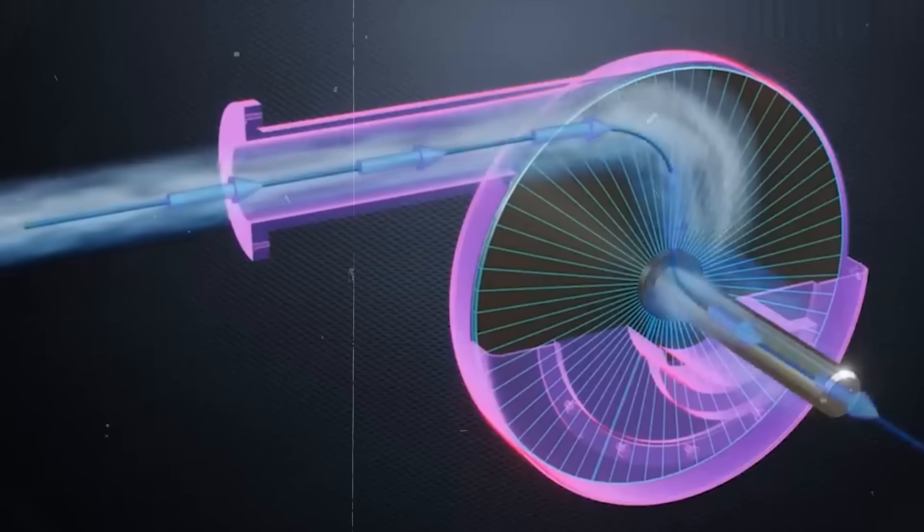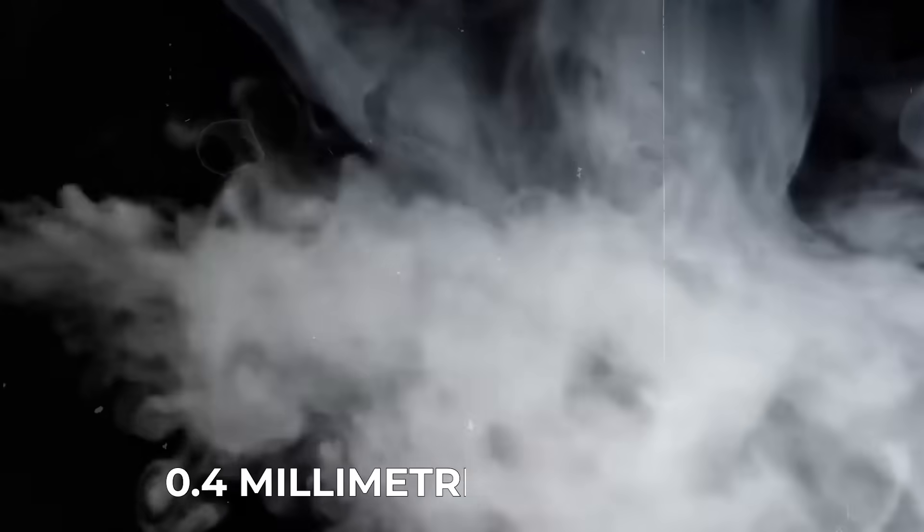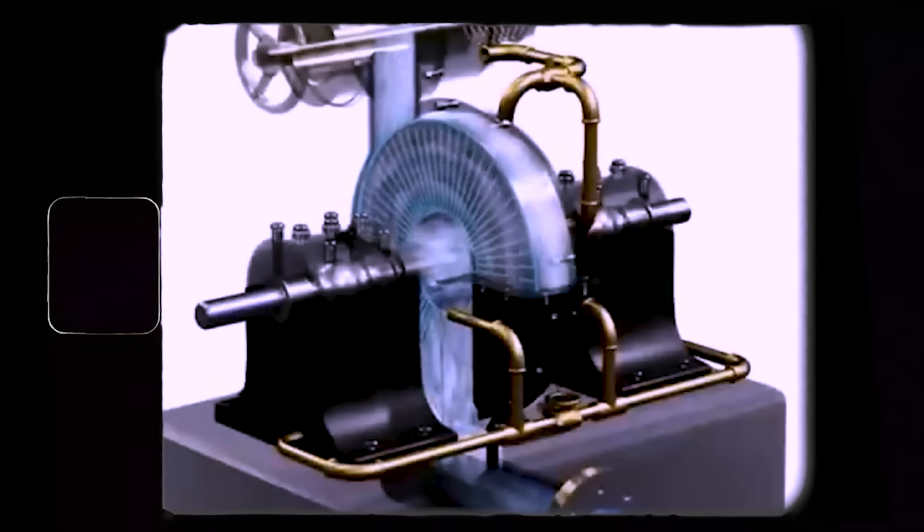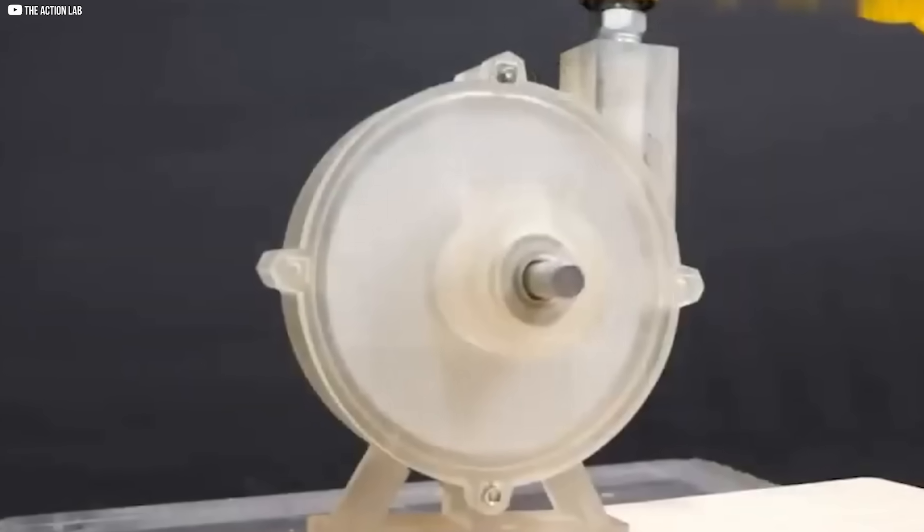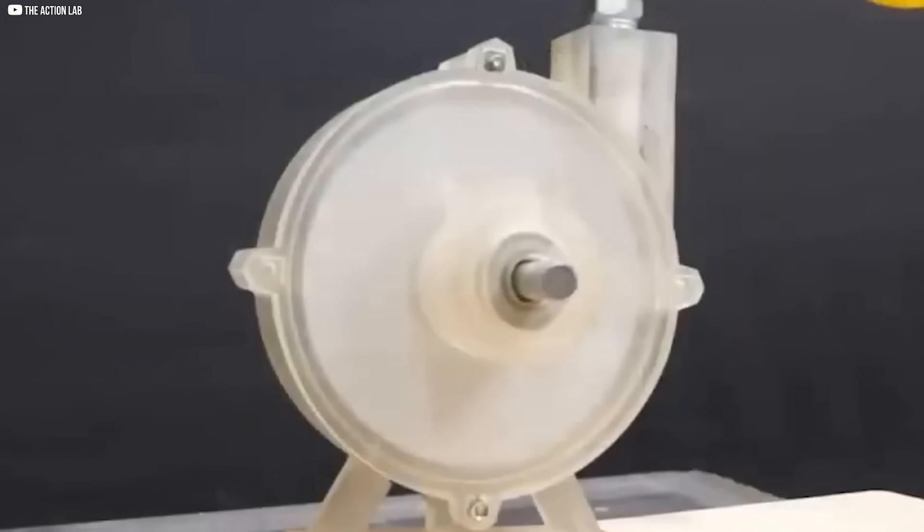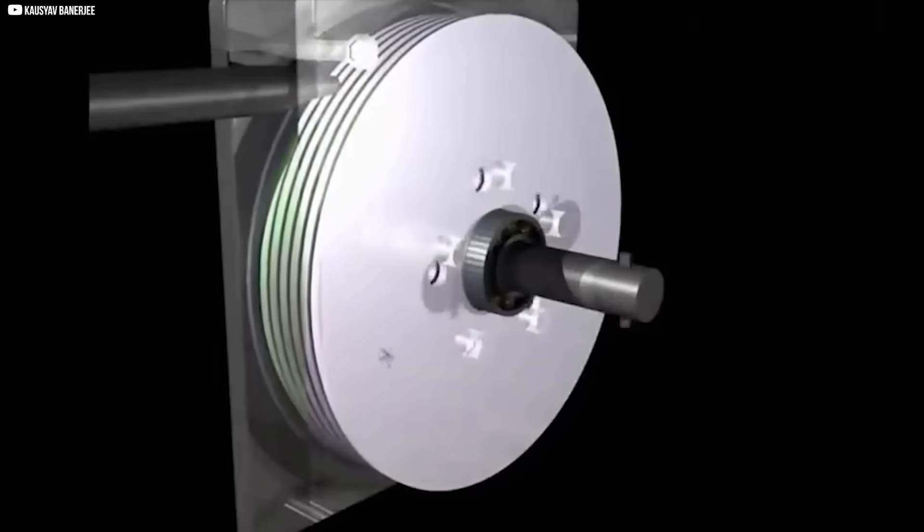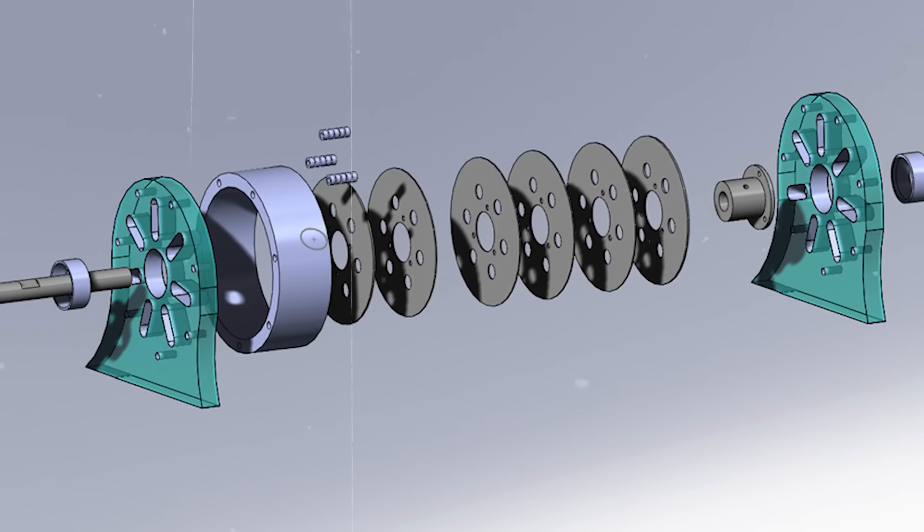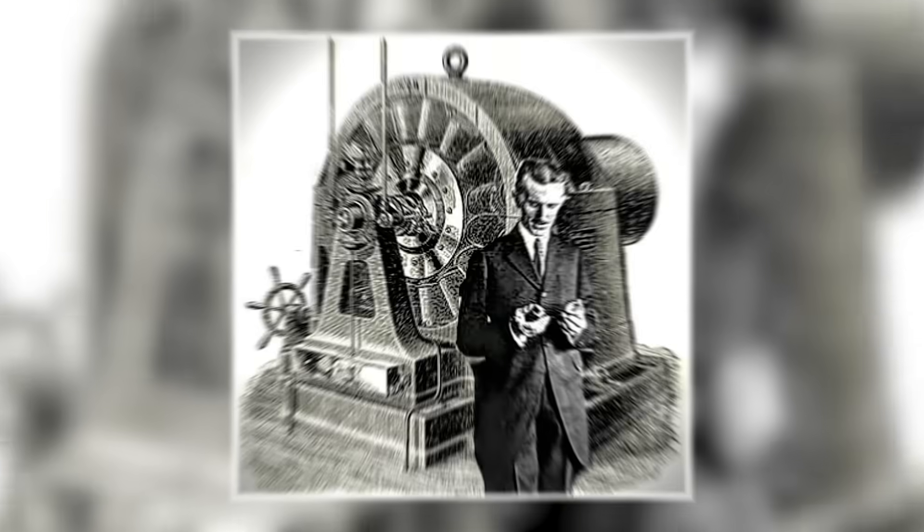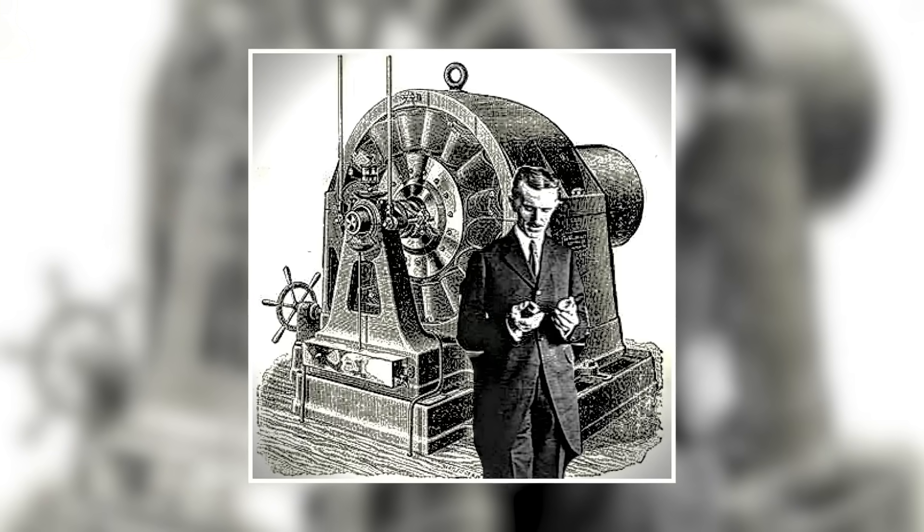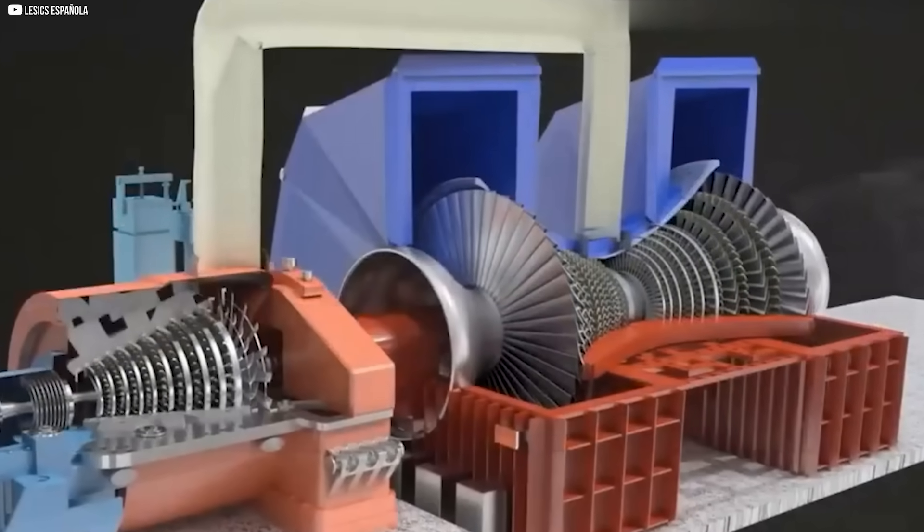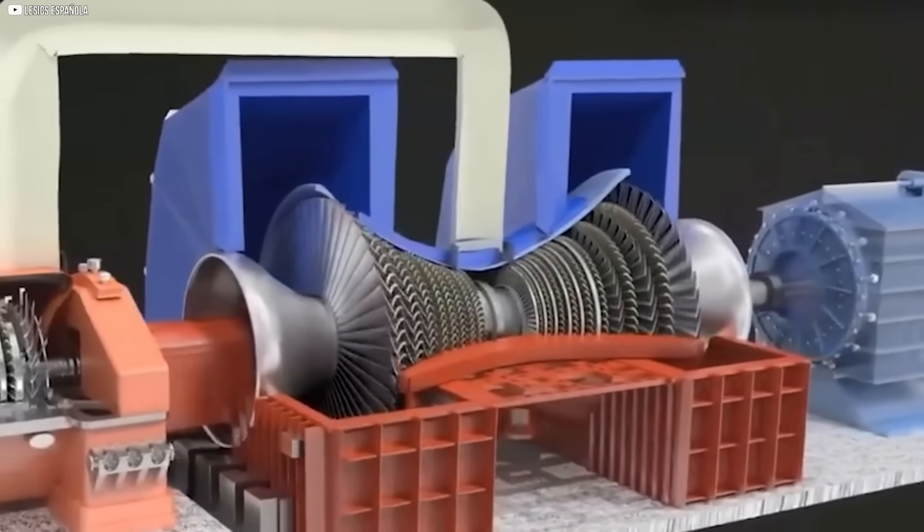He even calculated the ideal gap, about 0.4 mm for steam. That's thinner than a credit card. But the effect was dramatic. The turbine spun faster. The torque increased. The energy loss shrank. With every small adjustment, the turbine became more alive and more sensitive. Tesla was sculpting a machine that didn't resist the fluid. It cooperated with it.